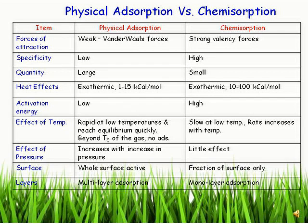Regarding layers: in physisorption, multilayer adsorption takes place — more than one layer of adsorption occurs. But in chemisorption, only monolayer adsorption takes place — only one layer of adsorbate is adsorbed on the adsorbent. These are the differences between physisorption and chemisorption.